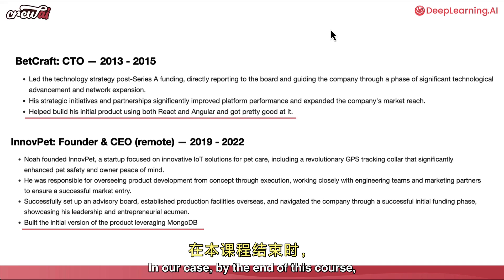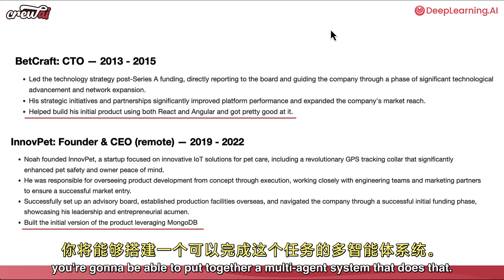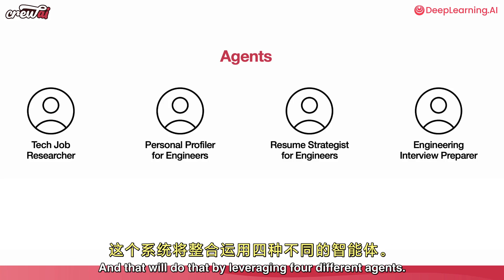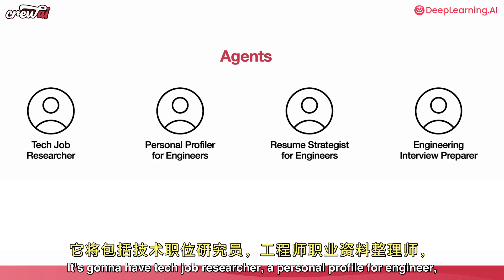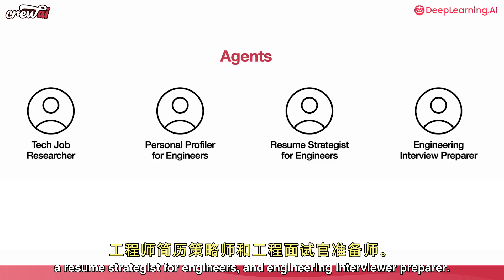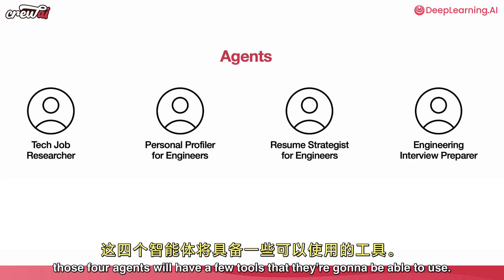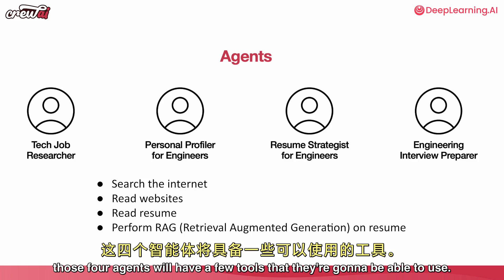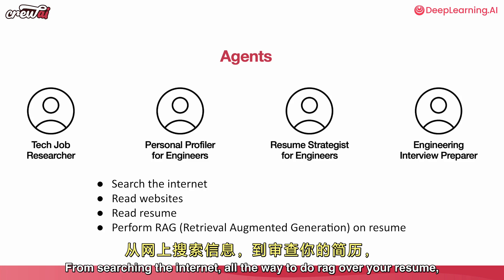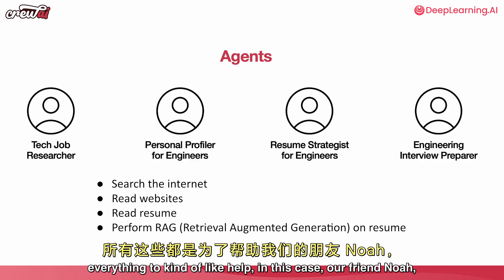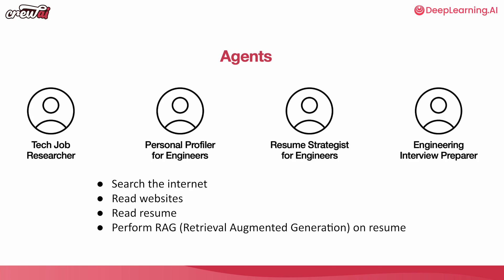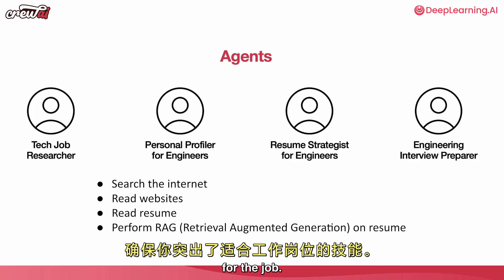By the end of this course, you're going to be able to put together a multi-agent system that does exactly that, leveraging four different agents: a tech job researcher, a personal profile engineer, a resume strategist for engineers, and an engineering interviewer preparer. Together, those four agents will have tools ranging from searching the internet all the way to doing RAG over your resume — everything to help Noah, and yourself, highlight the right skills for the job.